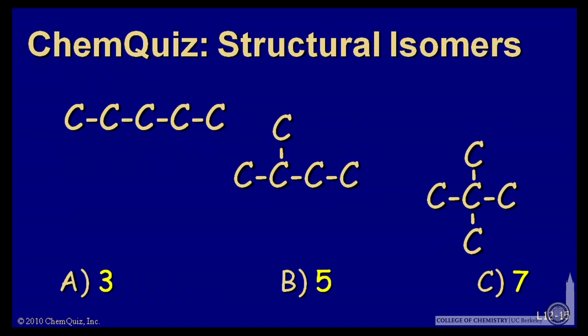In fact, these three ways of arranging the pentane chain are the only three structural isomers of pentane. So for structural isomers of pentane, there are three.